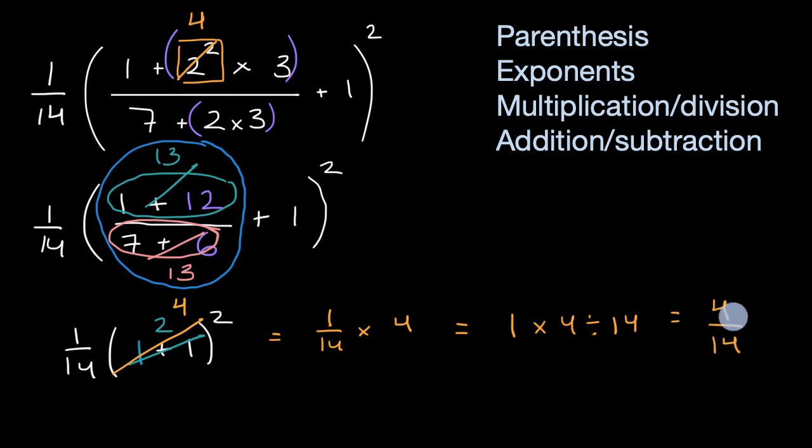And we're done. If you want, you could rewrite this by dividing both the numerator and the denominator by two, and you could get two over seven, but that's how we can evaluate this pretty complex expression, just step by step, looking at what we can simplify first.